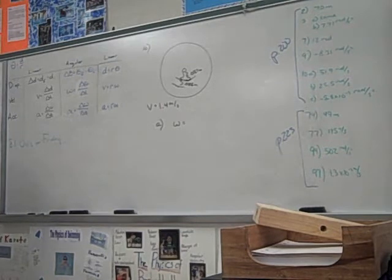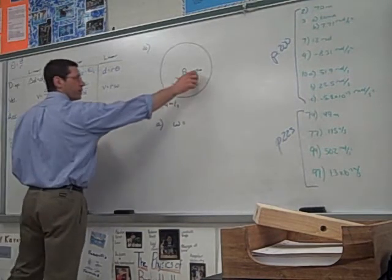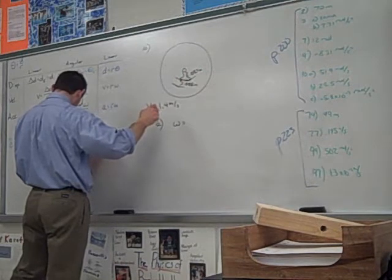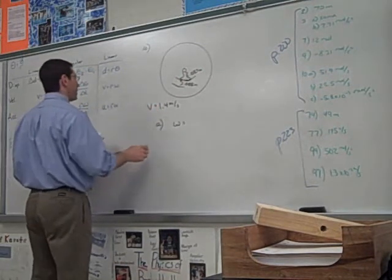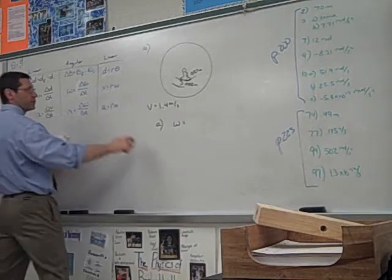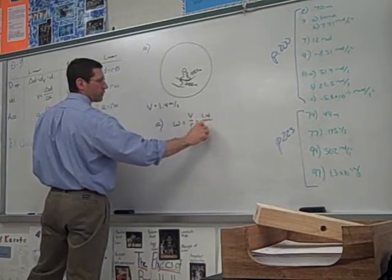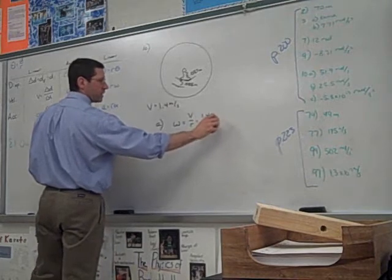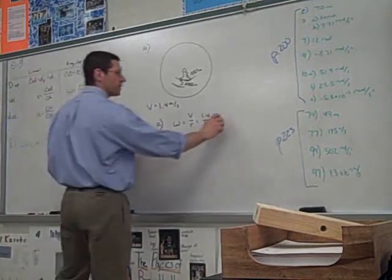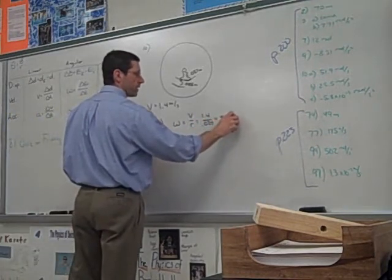Yeah, right, so we have V. We also know R is 0.027. So, in that case, we're going to go with this equation. We're going to do omega is V over R. So, 1.4 over 0.027. So that gives us 51.9 radians per second.